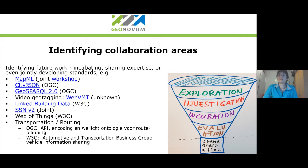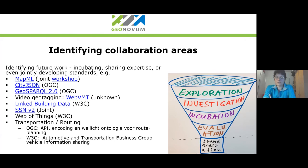A working group may come out of this — a W3C working group that would work on really embedding maps in the HTML standards, with browsers actually implementing that. Another one is CityJSON, an encoding for 3D city models, which is becoming an OGC community standard. Another one is GeoSPARQL — the idea to work on a second version was discussed in our group and that is now happening within OGC.